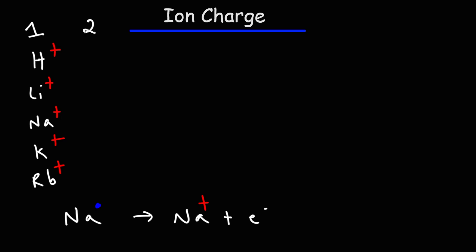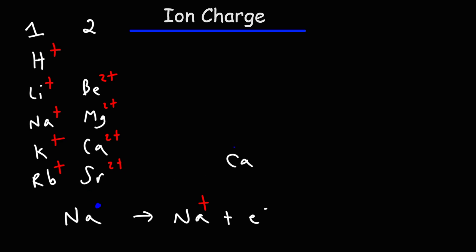In group 2, we have the alkaline earth metals — elements like beryllium, magnesium, calcium, strontium. These elements have two valence electrons. Because they have two valence electrons to give up, they will typically form a 2+ charge as an ion. So calcium, which has two valence electrons, will typically give up those two electrons, forming the calcium 2+ ion.